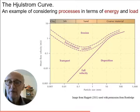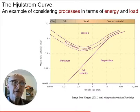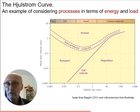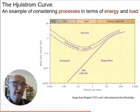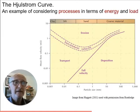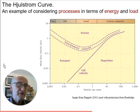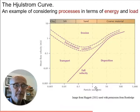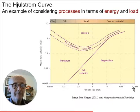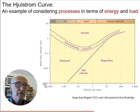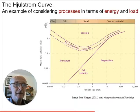A well-known example of the way we can think about processes and landforms in terms of this relationship between energy and work is the Hjulström curve — you've probably seen this before, but if not you'll easily find it in the literature. It shows, for a variety of different particle sizes from very fine grains up through to boulders, what is happening to those particles in flowing water as the water moves at different velocities.